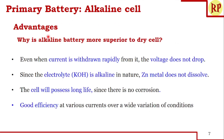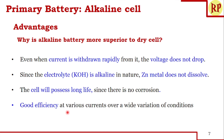The alkaline battery is superior to the dry cell because it overcomes the limitations of dry cell. When current is withdrawn rapidly, the voltage does not drop, whereas in dry cell the voltage dropped. Since the electrolyte is alkaline in nature, the zinc metal does not dissolve in it. Because it does not dissolve, there is no corrosion and the cell has a very long life with good efficiency from the beginning till the end of the cell's life.